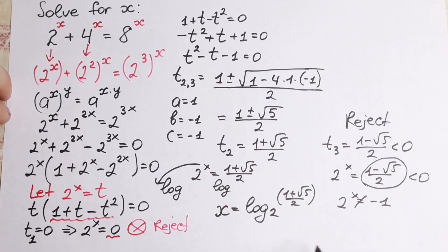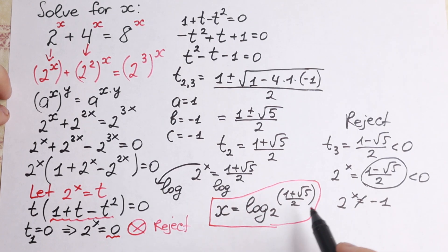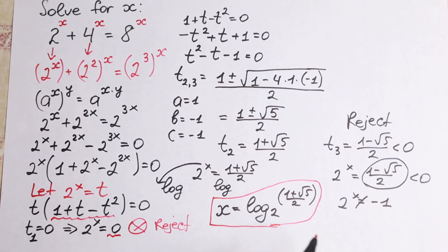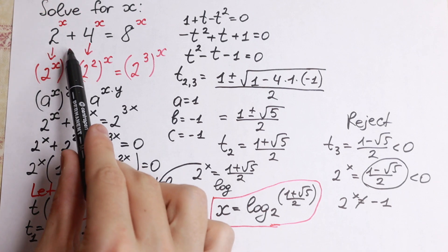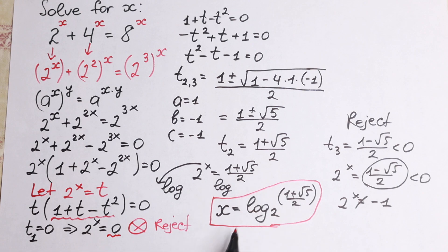I hope you understand this explanation. As you can see, there is no natural number root here — even though 2, 4, and 8 are nice numbers, x equals 1 gives 2 plus 4 equal to 8, which is not correct for the original equation. So the answer is a more complicated logarithmic expression. If you have any questions or suggestions, write them in a comment. Thank you so much for watching, and see you in the next video.